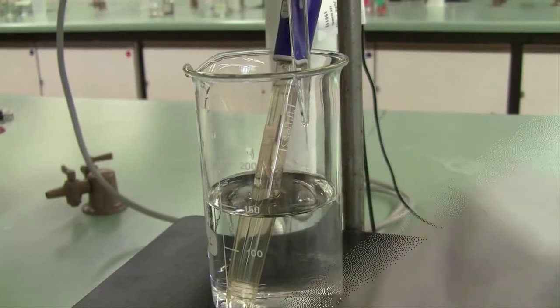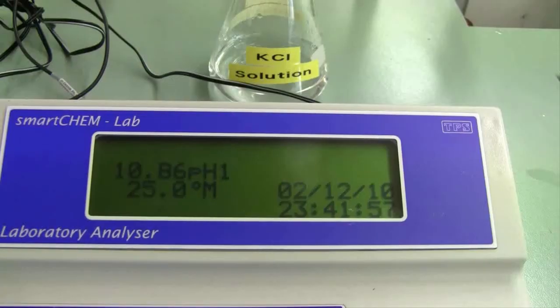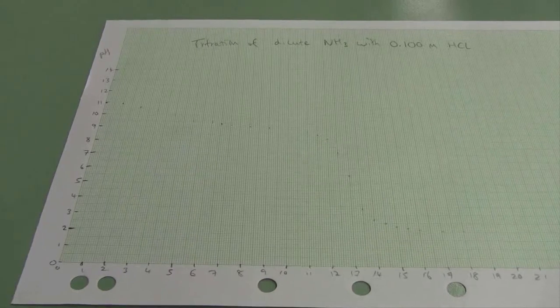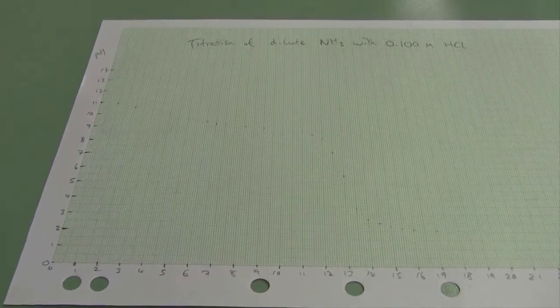Make an addition, count to ten, take a reading, plot it. Make an addition, count to ten, take a reading, plot it. If you do that, you'll end up with a nice smooth titration curve like this one.